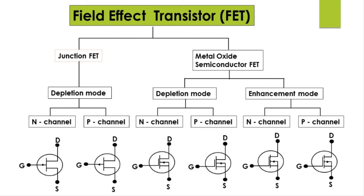Here is the circuit symbol for N-channel JFET, showing drain, gate, and source terminals. For P-channel JFET, we also have drain, gate, and source. The difference between N-channel and P-channel JFET is indicated by the direction of the arrow in the circuit symbol.